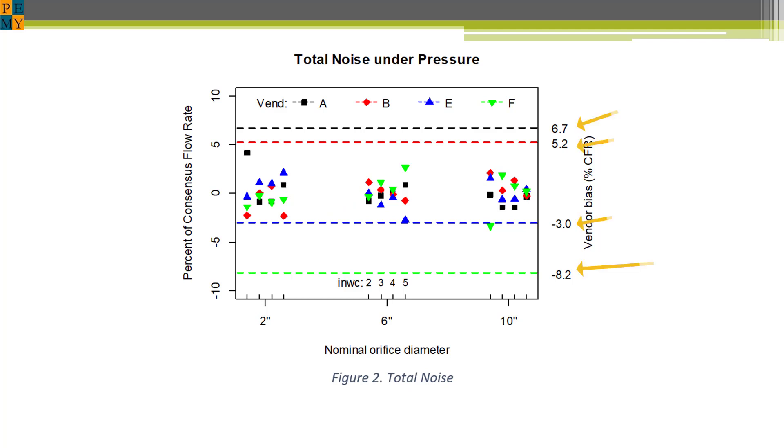Note how the vendor bias swamps the noise components, meaning that the vendors in their test rig are mostly responsible for the discrepant measurements. Vendor bias stands out above the noise, which is what it means to be statistically significant.